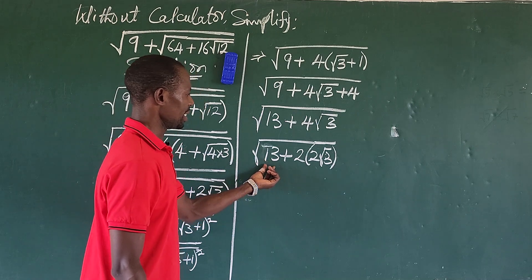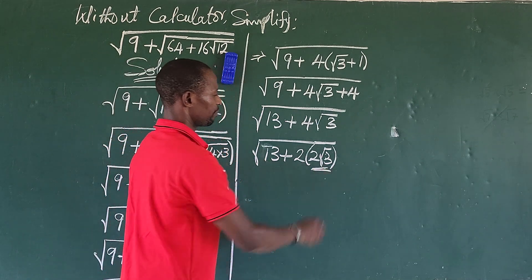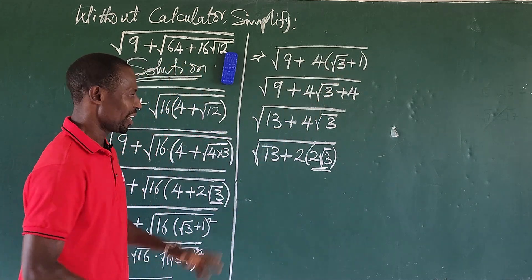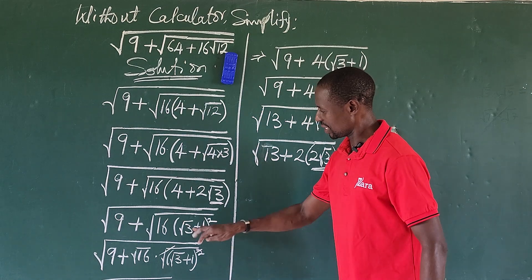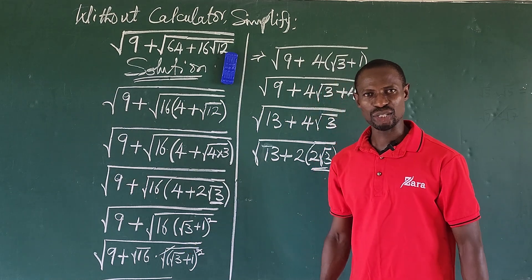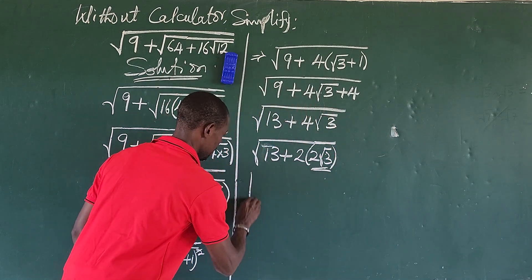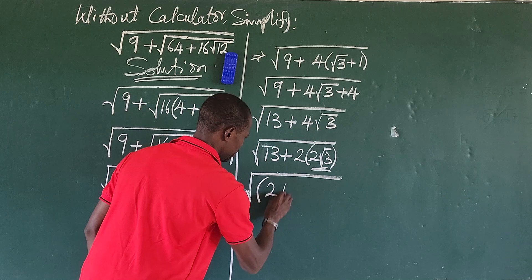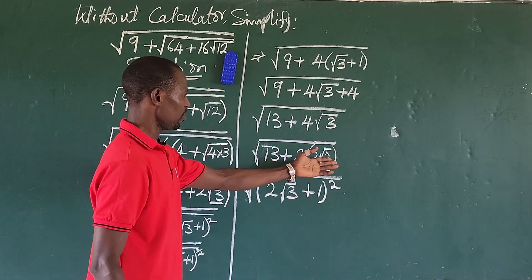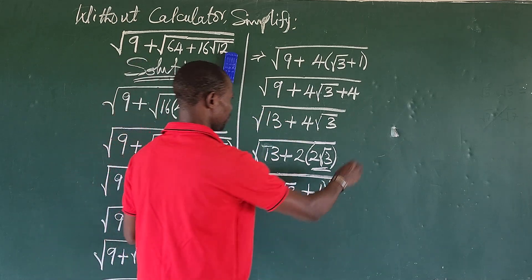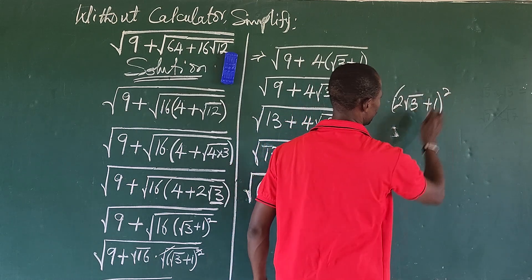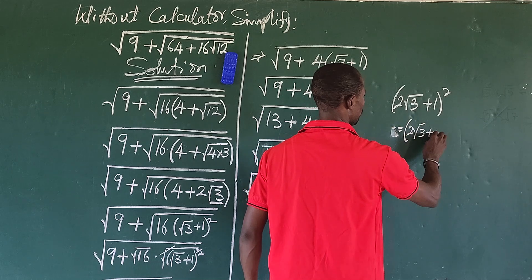Now we have 13 and 2 root 3 with a factor of 2 out front. We want to match this to the (a + b)² identity again. Since we already expressed 4 + 2√3 as (√3 + 1)², we just need to put a 2 at the front. We can rewrite 13 + 4√3 as the square root of (2√3 + 1)². In other words, we rewrite the expression as the square root of bracket 2 times root 3 plus 1, all to the power of 2.